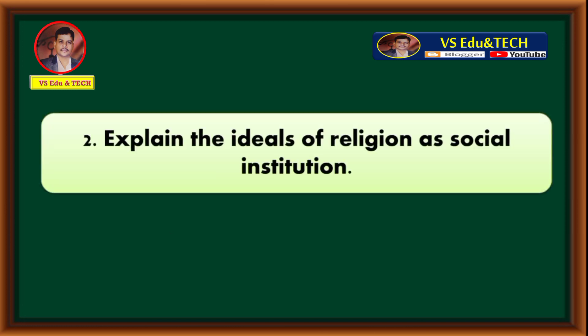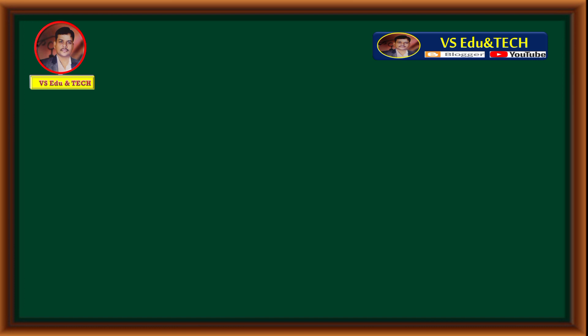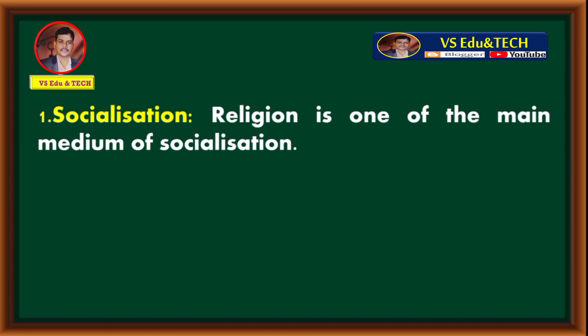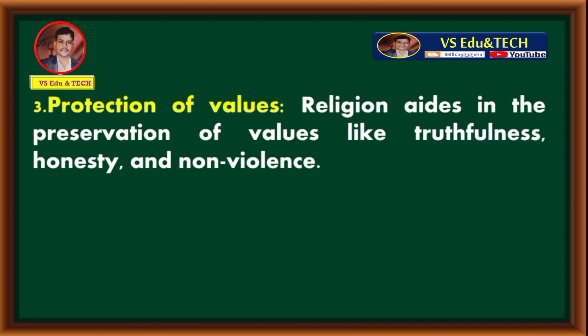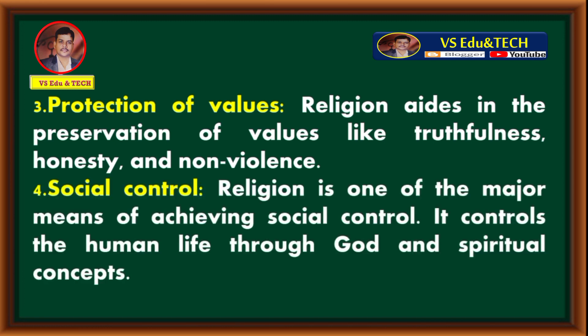Second question: explain the ideals of religion as a social institution. First — socialization: religion is one of the main mediums of socialization. Second — social unity: religion fosters unity by employing symbols and customs. Third — protection of values: religion aids in the preservation of values like truthfulness, honesty, and non-violence. Fourth — social control: religion is one of the major means of achieving social control, controlling human life through god and spiritual concepts.